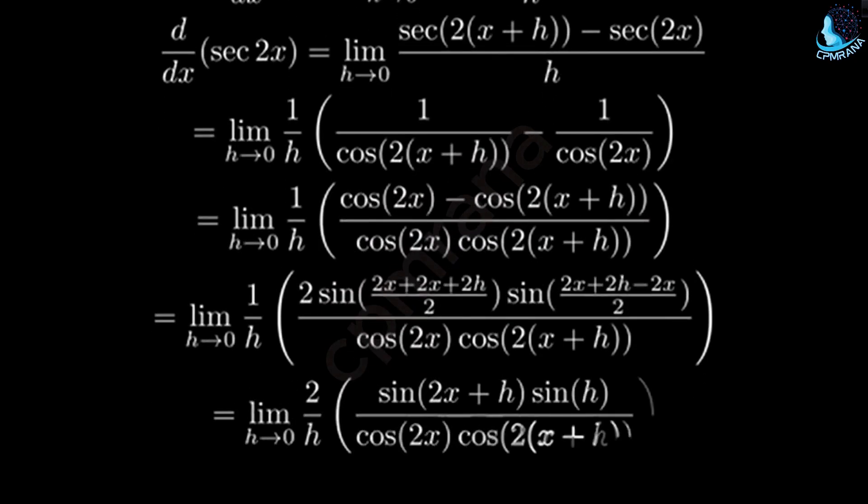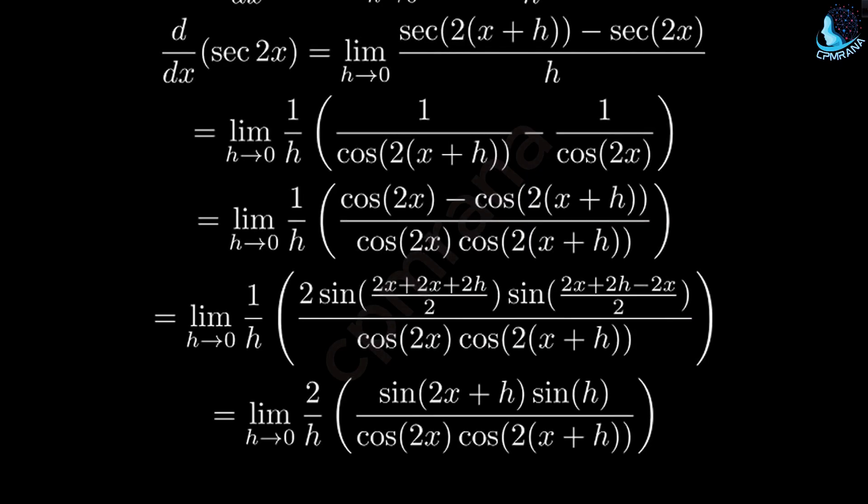Simplifying the arguments in the sine terms, we get sine of 2x plus h times sine of h in the numerator.